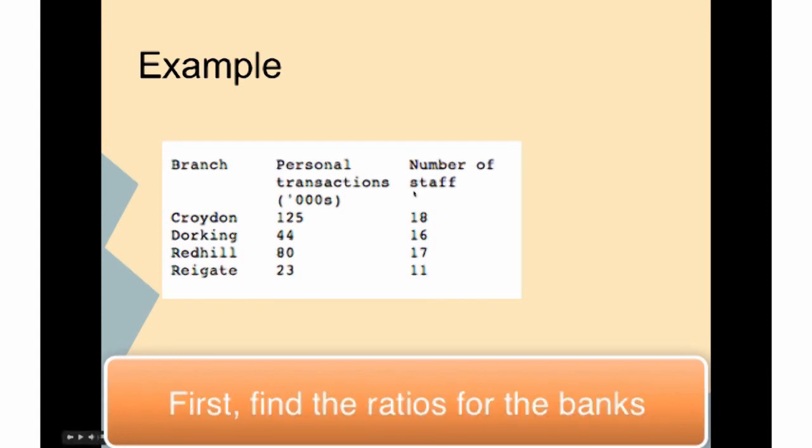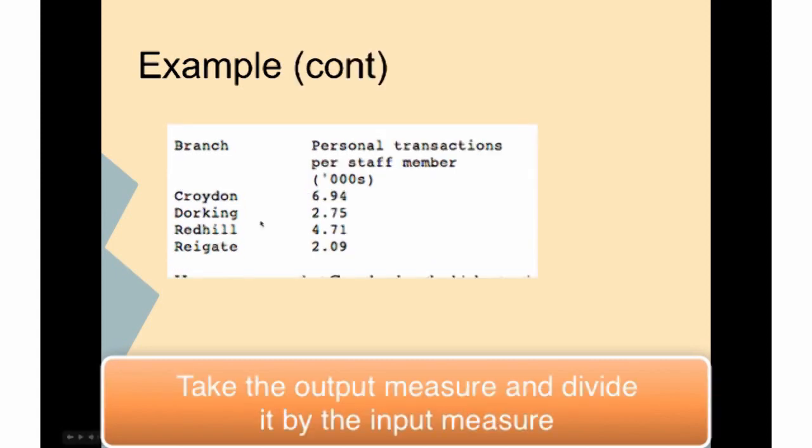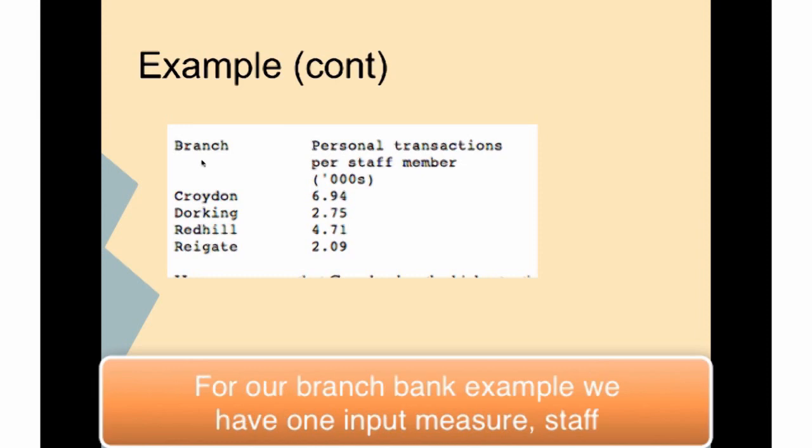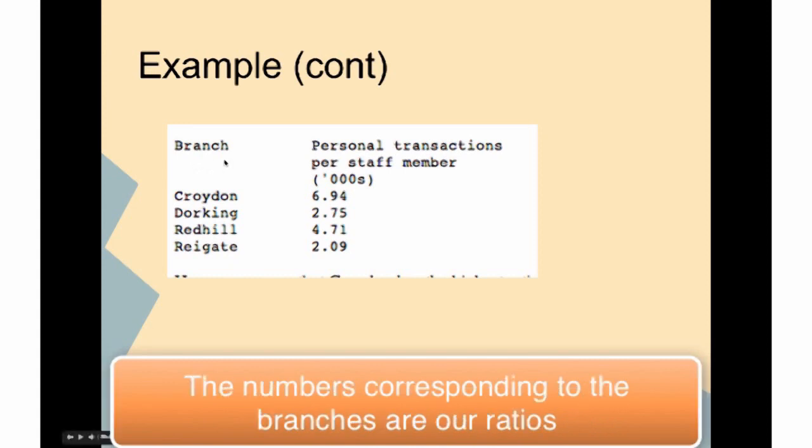First, you want to find out the ratios for these different banks. You take the output measure and divide it by the input measure. For our branch bank example, we have a single input measure - the number of staff - and a single output measure - the number of personal transactions. These numbers corresponding to the branches are our ratios.